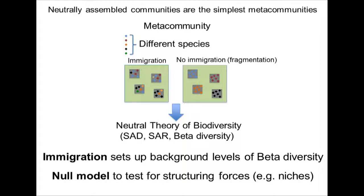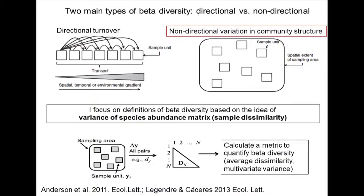One of the problems when we look at beta diversity is that this has been a very controversial topic in terms of how we quantify it. We can say there is directional turnover — the classical idea — and then there is non-directional variation in community structure, where you take different samples from an area, there will be some changes in species composition, and you quantify that with some index — usually classical ecological distance metrics like Bray-Curtis or similar. The idea is that we focus on definitions of beta diversity based on variation in community structure in space, ending up with some average dissimilarity quantifying the overall beta diversity in the area.